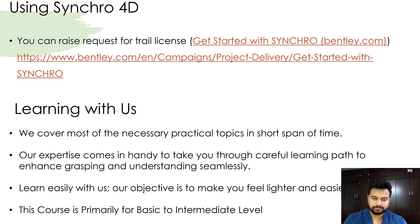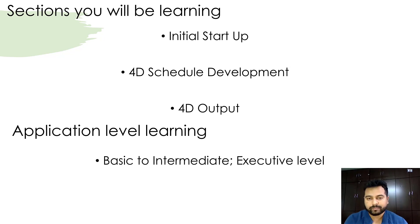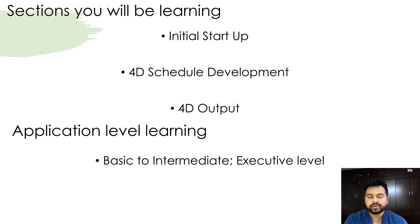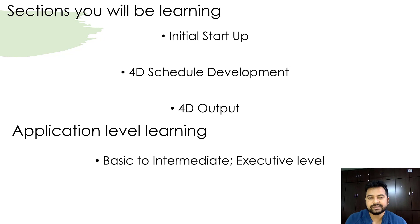The course is divided into three sections. The first is the initial setup — how to start up and learn the layout of the application. The second is the 4D schedule development process, where you will learn how to import the model, import the schedule, link the model with the schedule, and review the linking process, including creating baseline scenarios. The third is 4D output, where you learn how to produce outputs using the Synchro 4D application. It is a basic to intermediate level learning path.